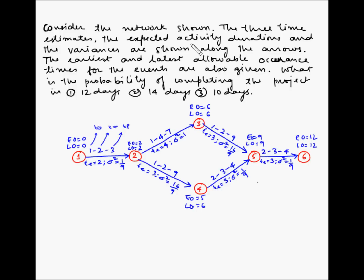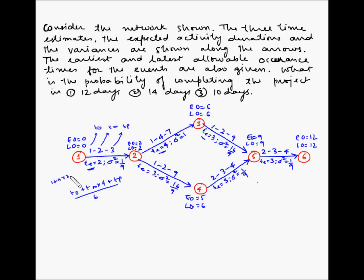We have also been given the expected activity durations, which is the Te, given for all the activities. This is calculated by the formula: T_O plus T_M multiplied by 4 plus T_P, all divided by 6. For example, (1 + 4×2 + 3)/6 = (1 + 8 + 1 + 2)/6 — that is 12 divided by 6, which is 2. So we have the expected duration for that activity as 2. The expected activity duration has been given for all activities in the same way.